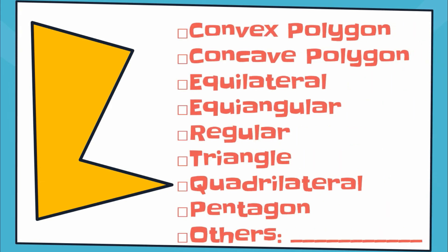Next, take a look at this figure. Is it convex or concave? That is concave because if we try to draw from this vertex up to here, there's a diagonal outside. Next, aside from it is concave, is it equilateral? No. Is it equiangular? No. Is it regular? No. Is it a triangle with three sides? No. Let's count how many sides there are: one, two, three, four, five. So that's a pentagon.